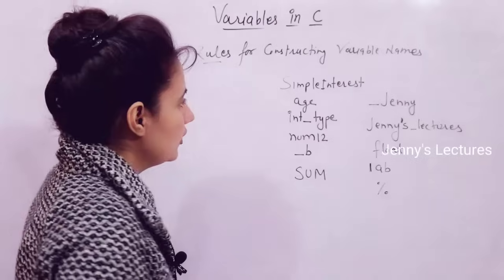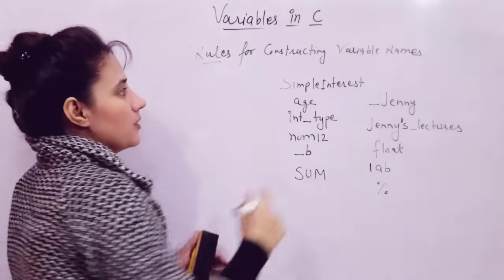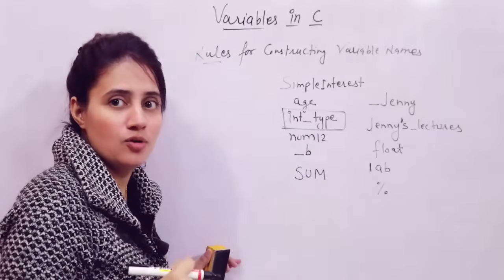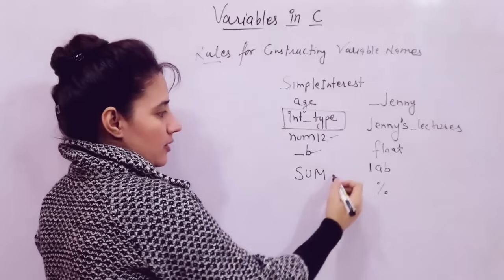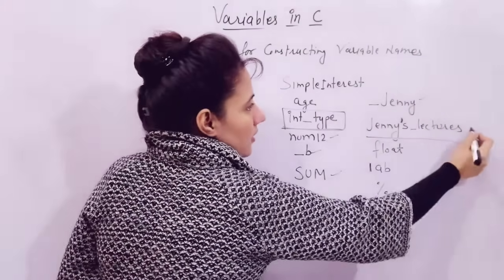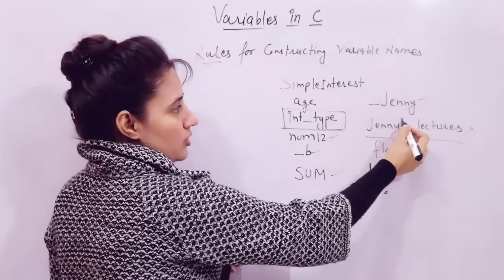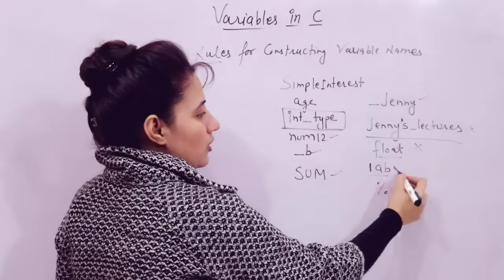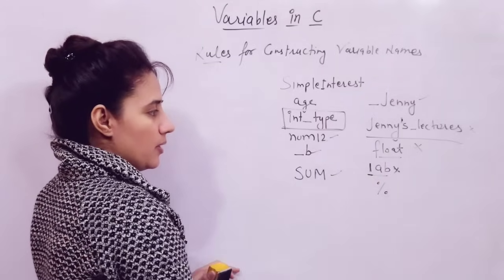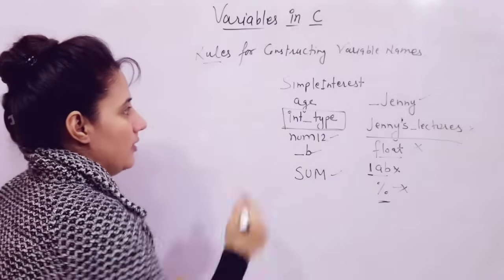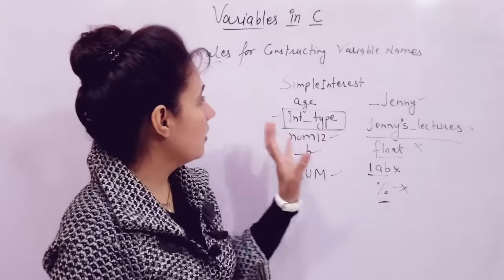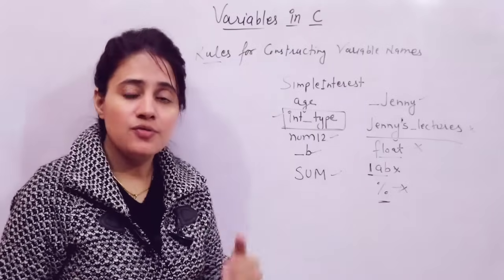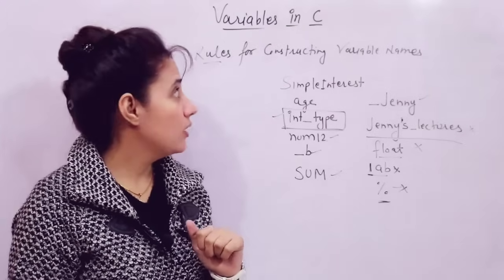So these are some variable names — you tell me which are valid or not. You can pause the video and find out. Some are valid, and 'int_type' you need to tell me in the comment box. The ones using a special character are invalid. 'float' is invalid because it is a keyword in C. Starting with a number is invalid. Special characters are not allowed. I think that's it about variables. In the next video I will discuss data types in C language, or maybe identifiers and keywords in C language first.